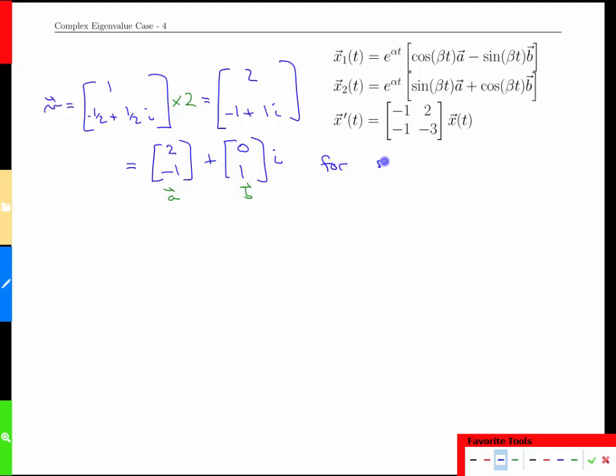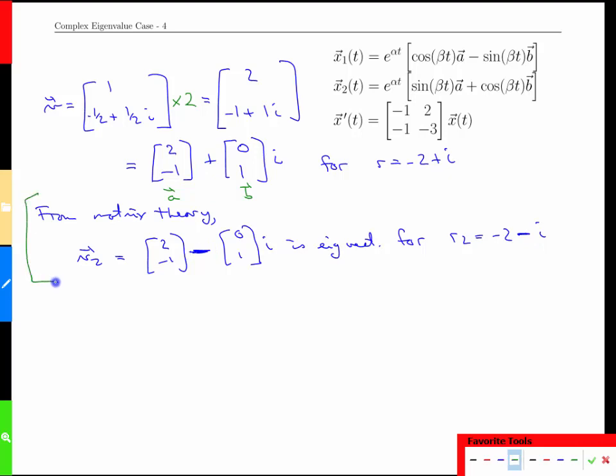Recalling that this eigenvector came with the root -2 + i, from some matrix theory we could also guarantee that the second vector here, which would be [2; -1] minus [0; 1]i, is the eigenvector for the other root r₂ = -2 - i. So flipping the sign of the imaginary component flips the sign of the imaginary component on this eigenvector as well. Turns out that really isn't required because all we need to build our solution is the eigenvector for the original plus i here with this a and b. So what we're going to do is simply use that formula to build the general solution.